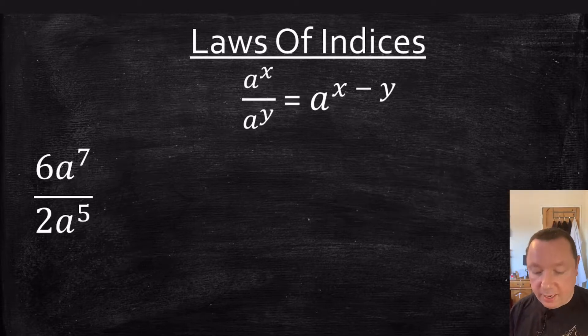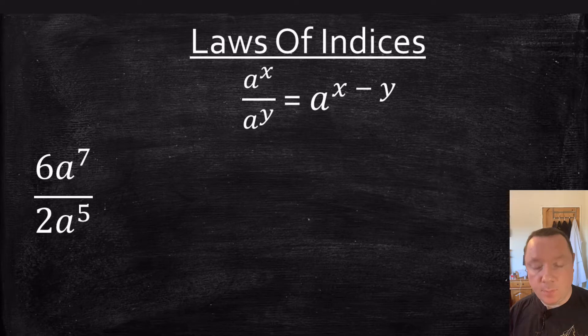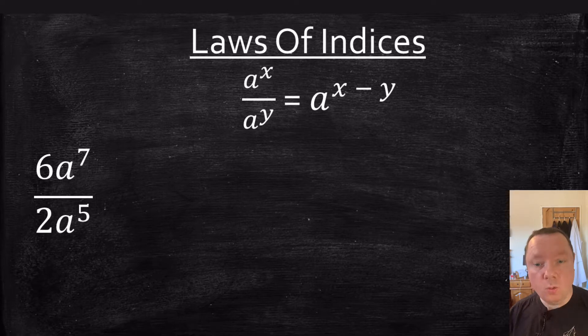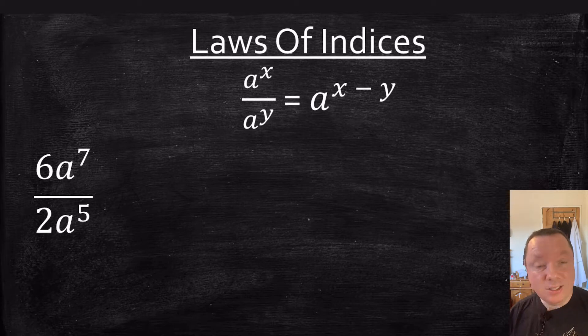If we take a to the power of x and divide by a to the power of y, and a is the same number, then we can just take away the powers. Remember this only works if the base is the same, so the same number or letter for your indices.